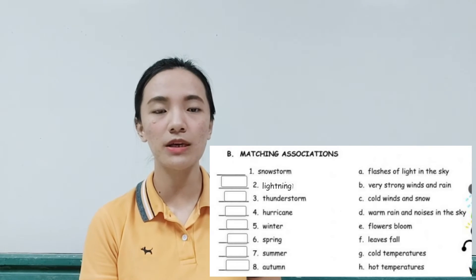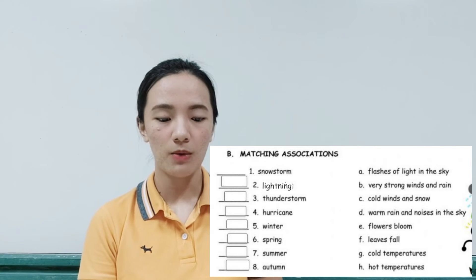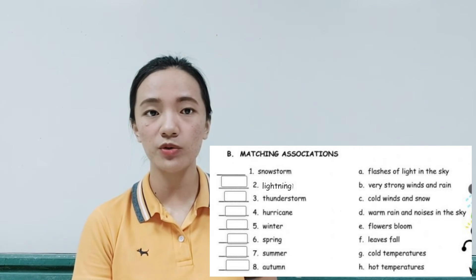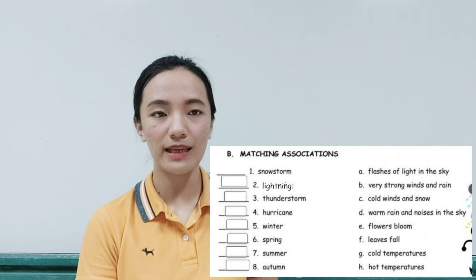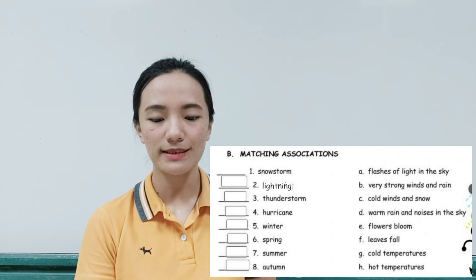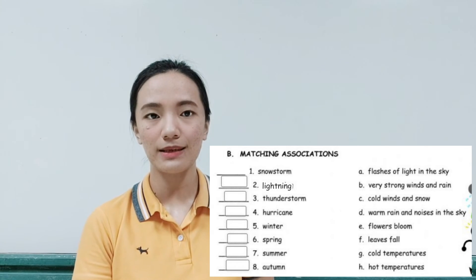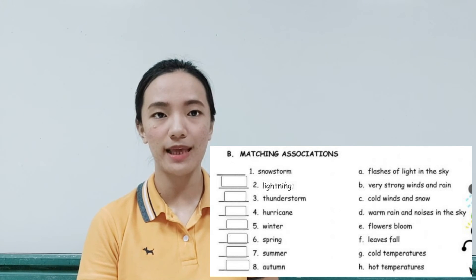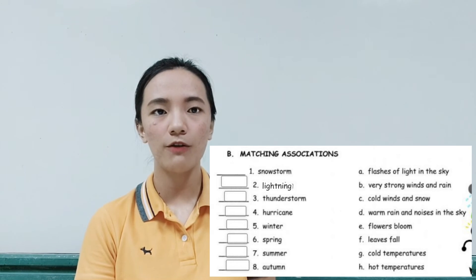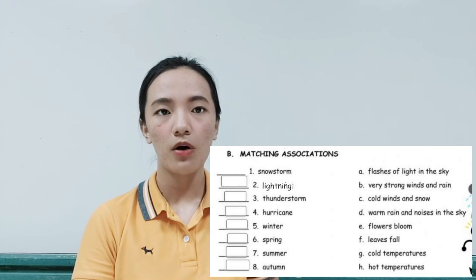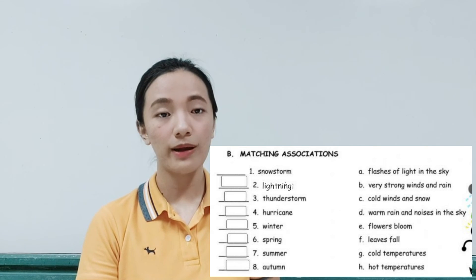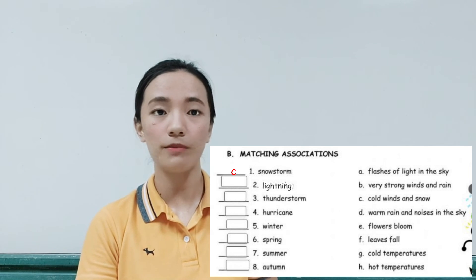Next, part B: matching associations. Match the words with the correct description. For example, number one: 'snow storm.' How do you describe it? A — flashes of light in the sky; B — very strong winds and rain; C — cold winds and snow; D — warm rain and noises in the sky; E — flowers bloom; F — leaves fall; G — cold temperatures; or H — hot temperatures. The correct answer is letter C. Write the letter on the blank before the number.